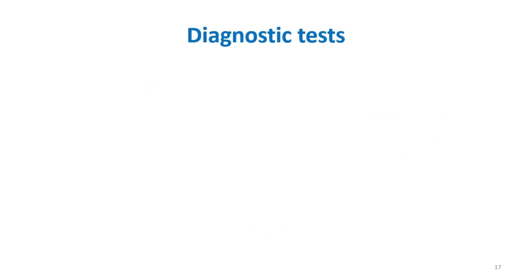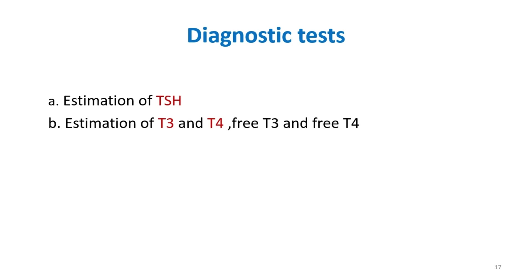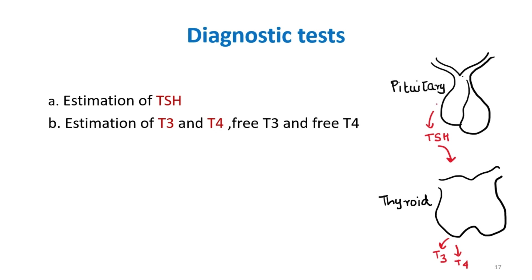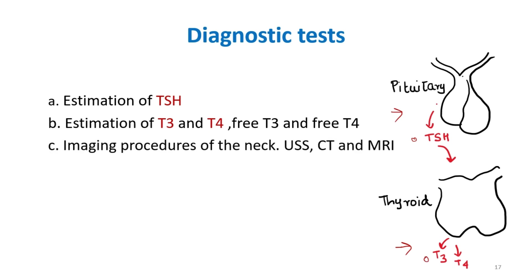Moving on to diagnostic tests: the important tests are estimation of thyroid stimulating hormone (TSH) and estimation of T3 and T4. The thyroid gland produces T3 and T4 under the influence of TSH from the pituitary. In hyper- or hypothyroidism, the problem can be with the thyroid gland or the pituitary, so both TSH and T3/T4 must be measured to differentiate the lesion site. Imaging procedures like ultrasound, CT scan, and MRI can also be done.